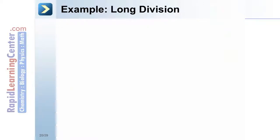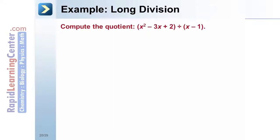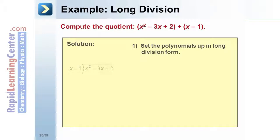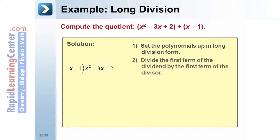Example: Long division. Compute the quotient of quantity x squared minus 3x plus 2 divided by the quantity x minus 1. Solution: First, set the polynomials up in long division form. Second, divide the first term of the dividend by the first term of the divisor to get the first term of the quotient, x.